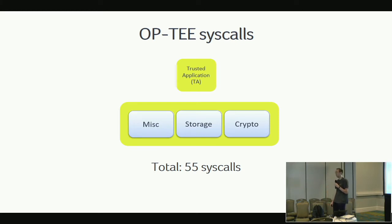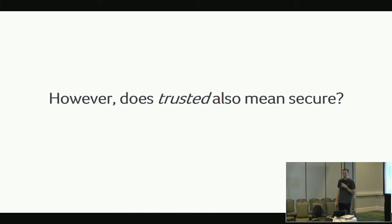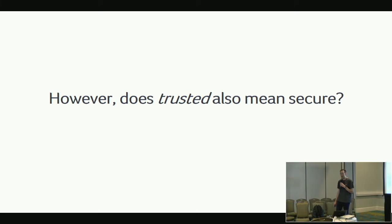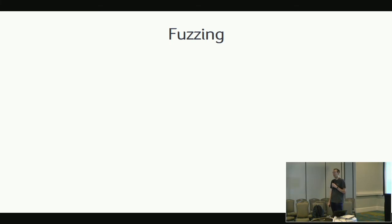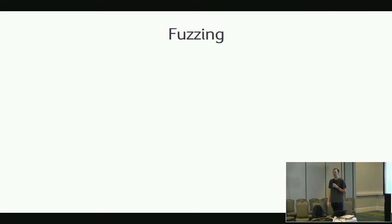Not that long ago, roughly 15 system calls have been removed — the secure element subsystem is now removed. However, one question we ask as a security lab is: is trusted also equal to secure? Especially because there are many vendors that take a solution such as OP-TEE and start adding their own extensions to it. We do a lot of manual evaluations involving code review of the modifications and of the core system itself. But this takes an awful lot of time, and who doesn't like automation?